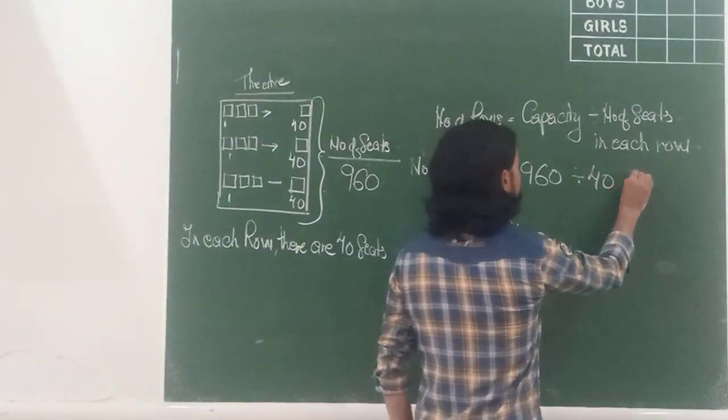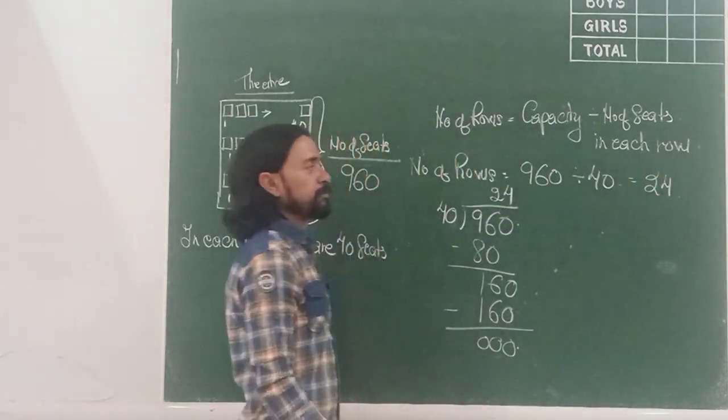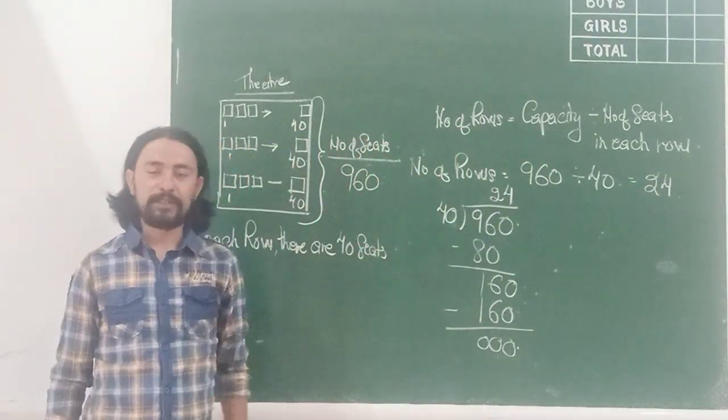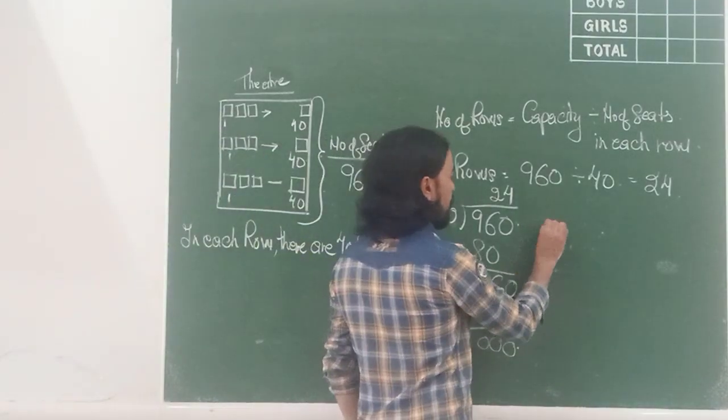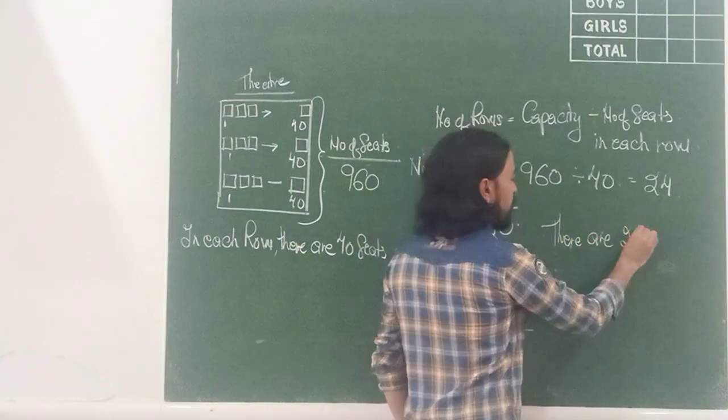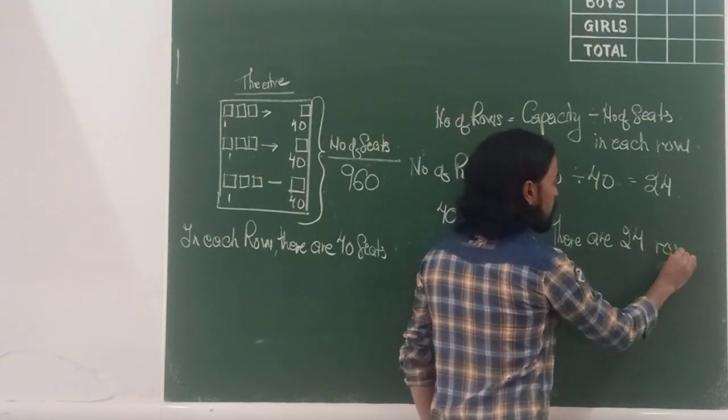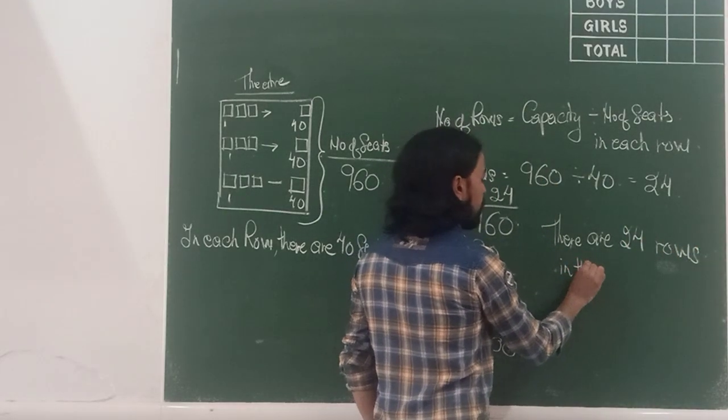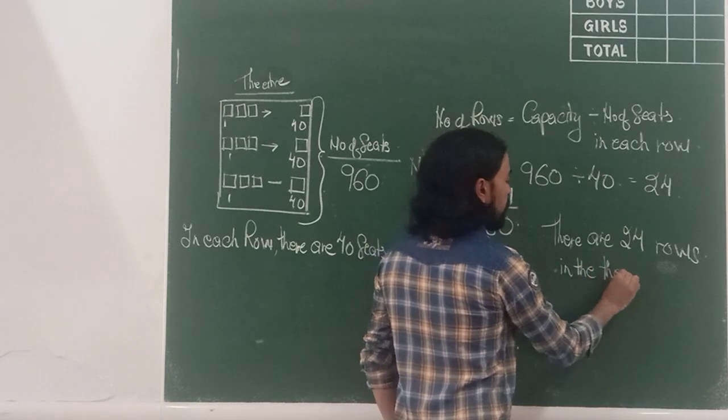My answer is 24. Number of rows, 24. So, now I can write my final statement. There are 24 rows in the theater.